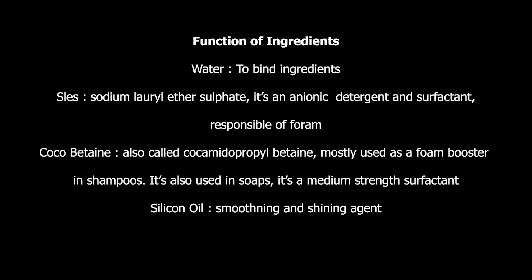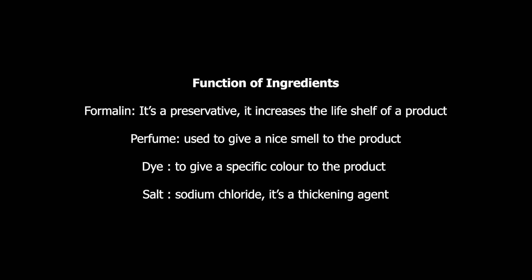The next ingredient is silicon oil — in this mixture it has the function of a smoothing and shining agent. The next ingredient is formalin; it's a preservative that increases the shelf life of the product. Then perfume is used to give a nice smell to the product — you can always decide on the perfume of your choice. The next ingredient is the dye, used to give a specific color to the product. Then we have salt, which is simply sodium chloride; it's a thickening agent.